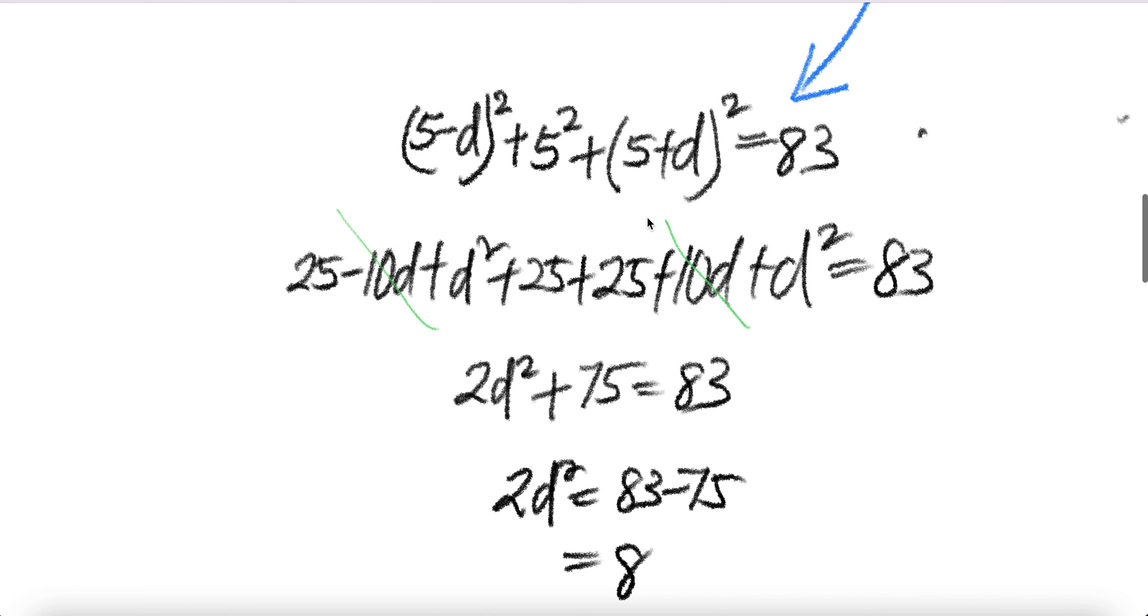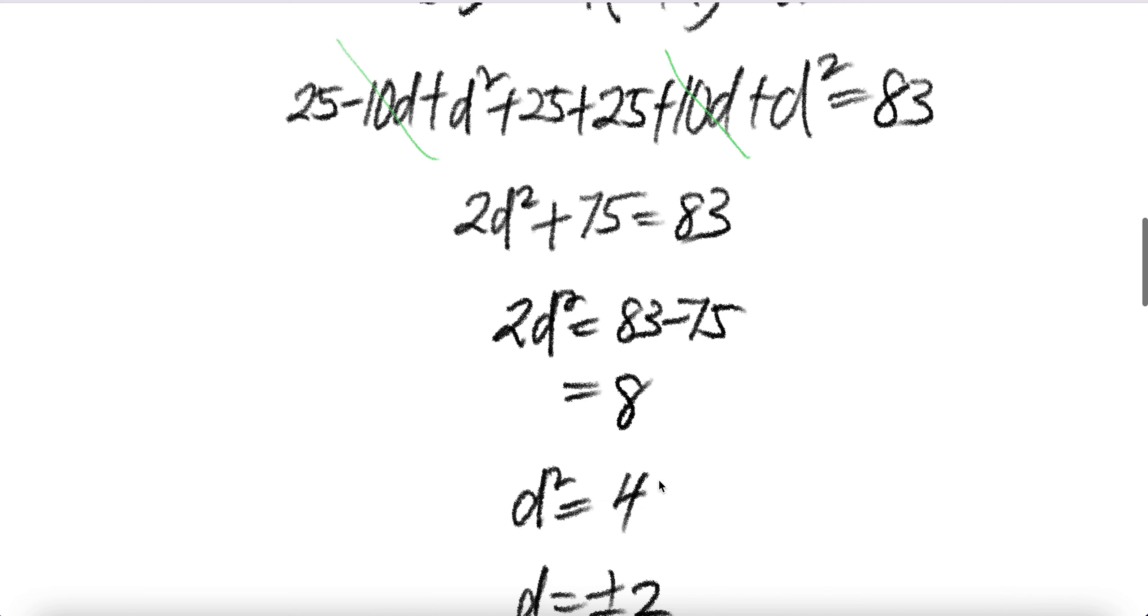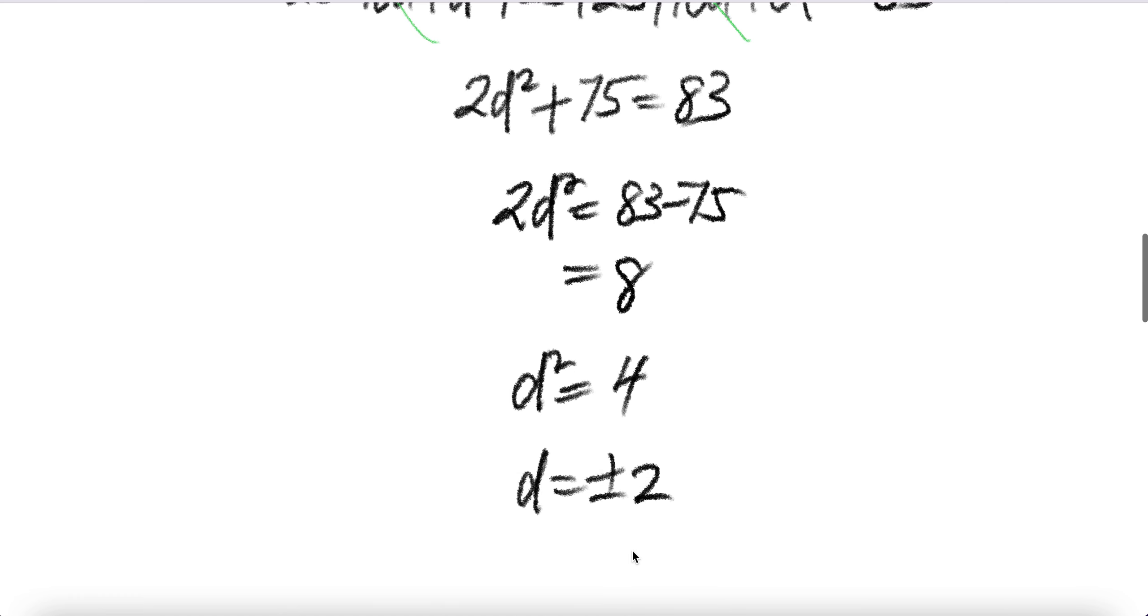Minus 10D and 10D cancel. You get 2D squared plus three 25s. That D squared is equal to 83 minus 75. Difference is 8. Cancel. You get D squared equal 4. Therefore, D equal plus minus 2.